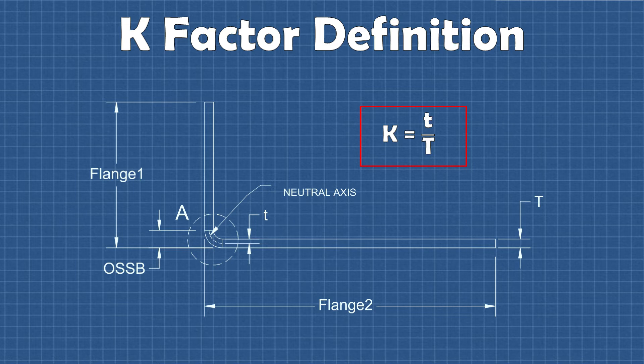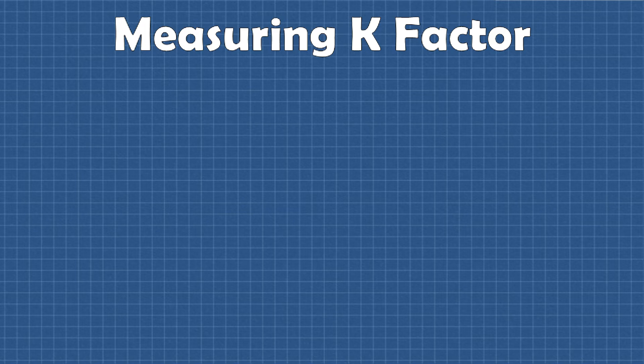The only problem here is that the location of the neutral axis isn't easily measurable. In other words, if I handed you a piece of formed material and told you to measure that lowercase t dimension, you're going to have a really hard time. So in order to back calculate the k-factor from a formed piece of material, we have to use some indirect methods.